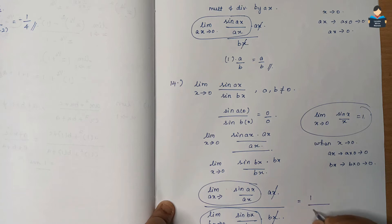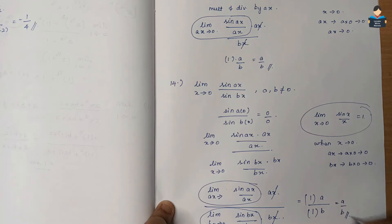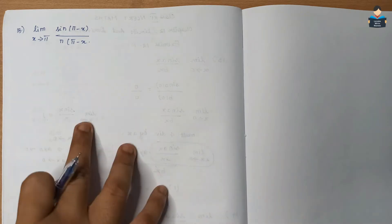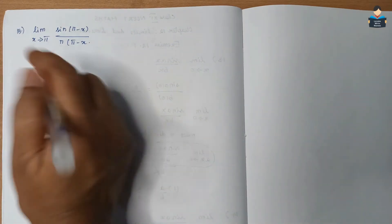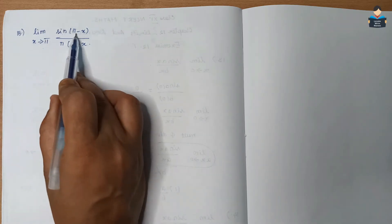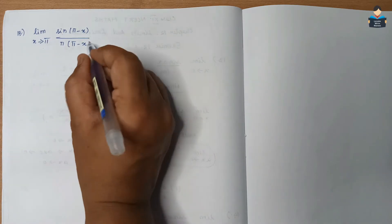This gives us 1/1 × a/b, which is a/b. That is the answer. Now Question 15: limit x tends to π of sin(π − x) by [π × (π − x)].